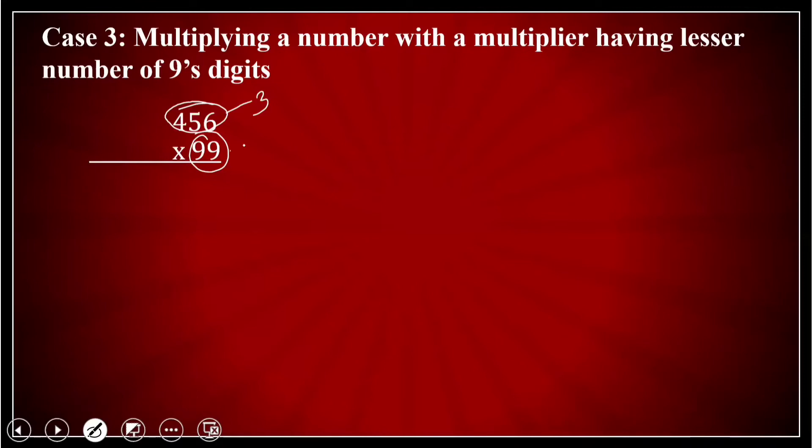And how many nines are here? There are two nines. So the number of nines is lesser than the number being multiplied to. So in this case, the method changes quite a bit.